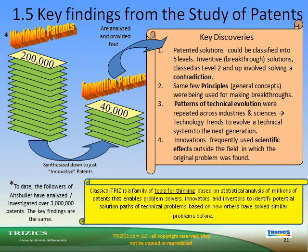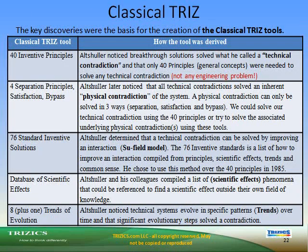To date, followers of Altshuller have analyzed over 3 million patents, and the key findings remain the same. The 40 inventive principles: Altshuller noticed breakthrough solutions solved what he called a technical contradiction, and that only 40 principles — general concepts — were needed to solve any technical contradiction. The four separation principles — satisfaction and bypass — address physical contradictions: Altshuller later noticed all technical contradictions solved an inherent physical contradiction, which can only be resolved through separation, satisfaction, or bypass.